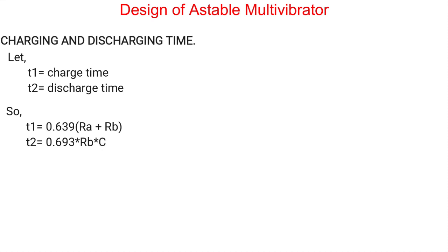We just saw how IC555 as an A-stable multivibrator works. Now, it's time to study the design part of it. Charge and discharging times. T1 represents the charge time and T2 is the discharge time. As given T1 is equals to 0.639 multiplied by the sum of Ra plus Rb and T2 is 0.693 multiplied by Rb into C. Ra and Rb are the resistors measured in ohms and C is the capacitor measured in Fahrenheit.